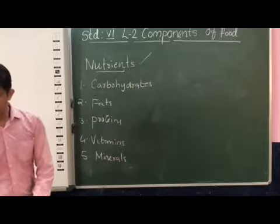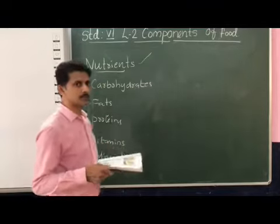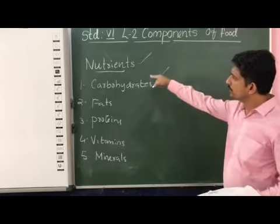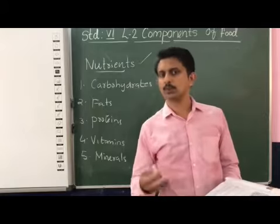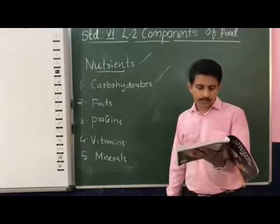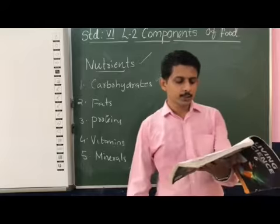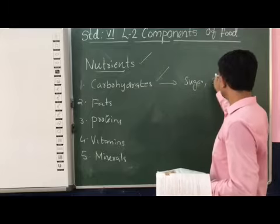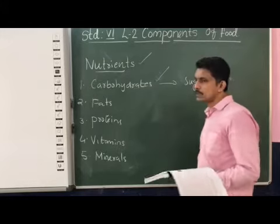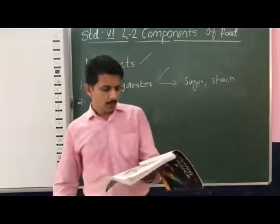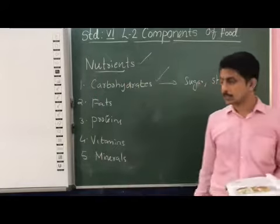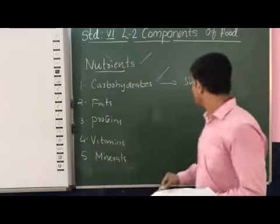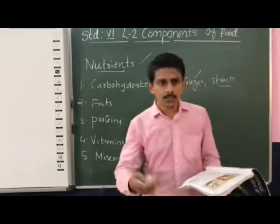We are going to discuss each of these various types of nutrients one by one. The first type of nutrient is carbohydrates, which include sugar and starch. Carbohydrates give quick energy — in the case of sugar, energy is provided immediately, while in the case of starch, energy is provided slowly.